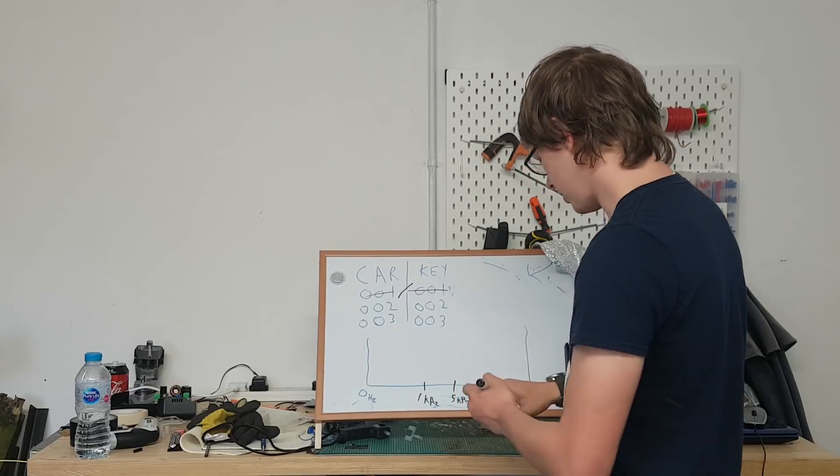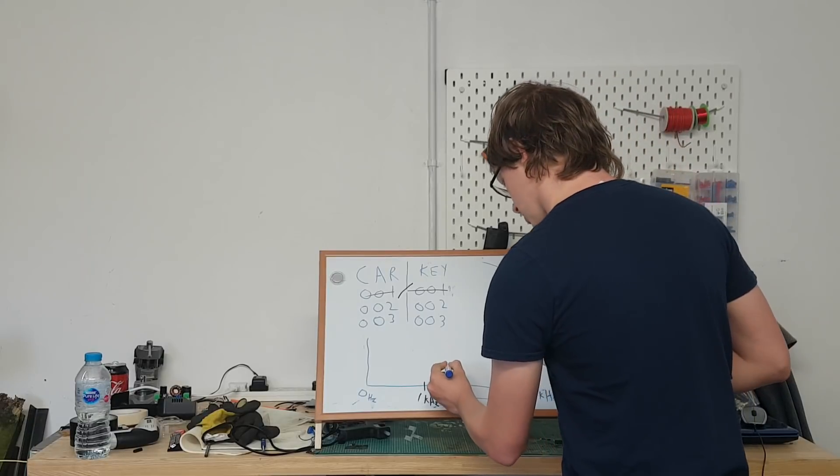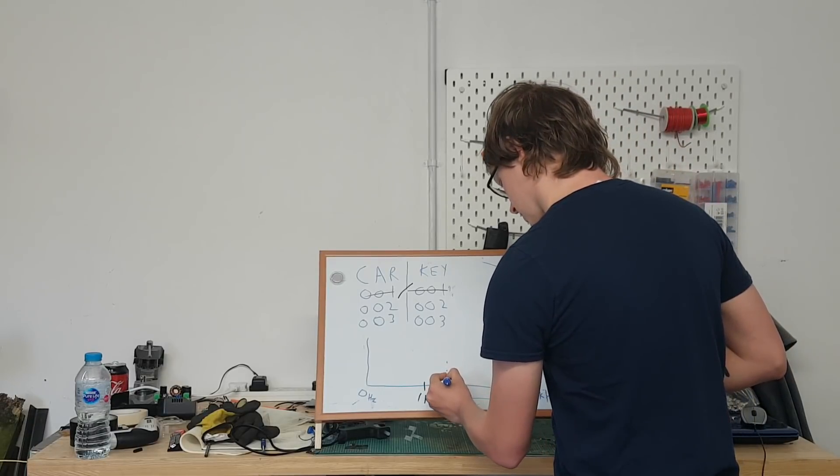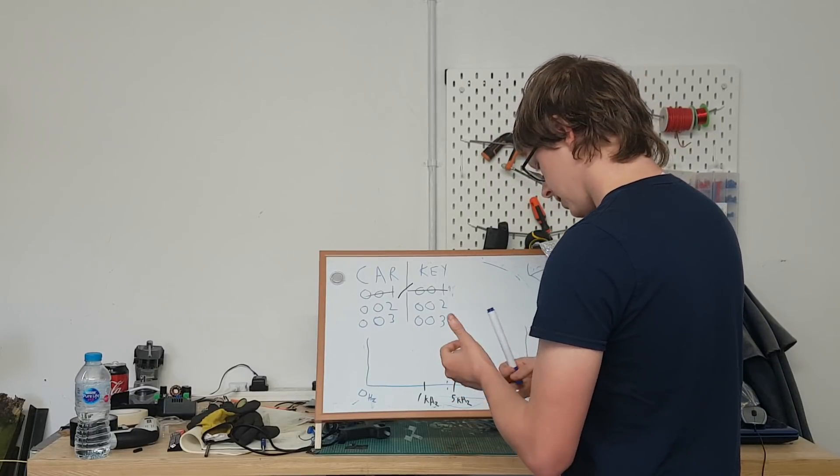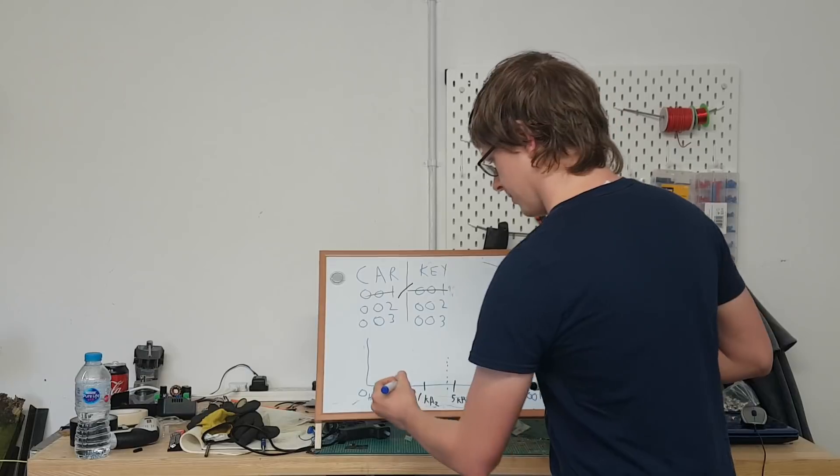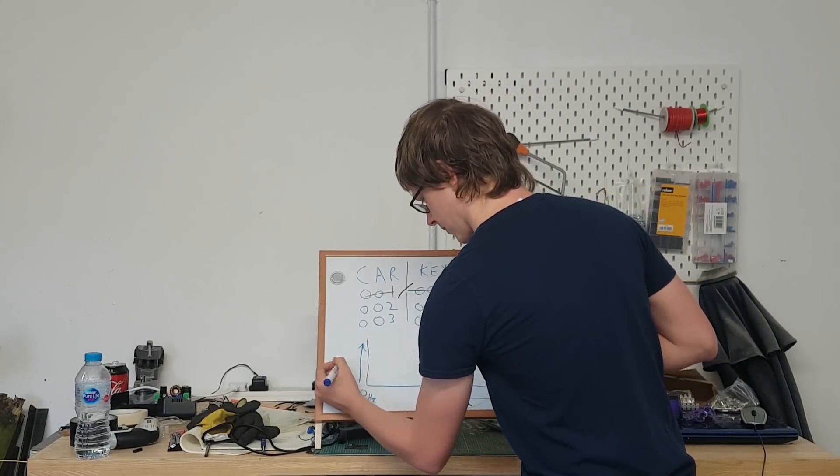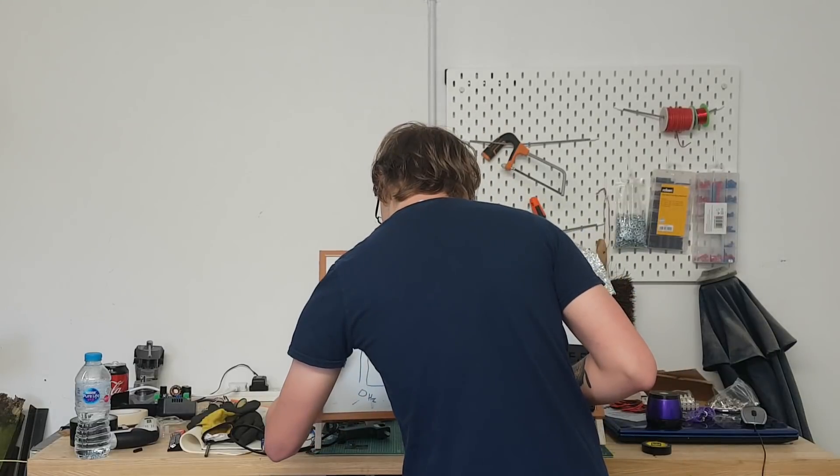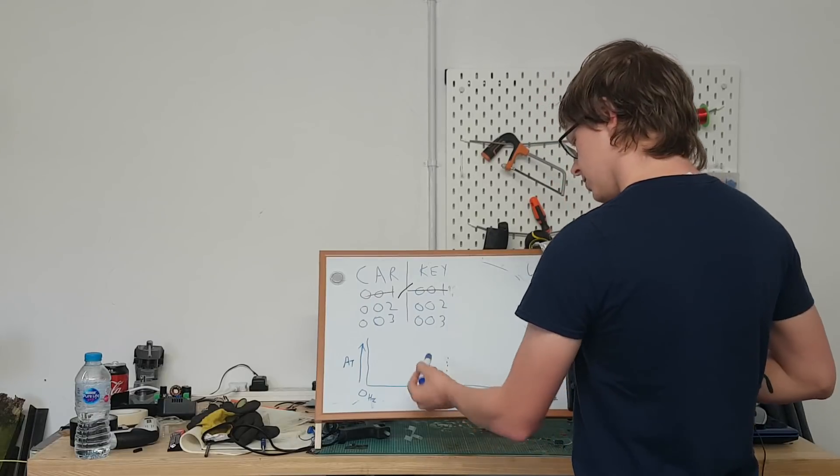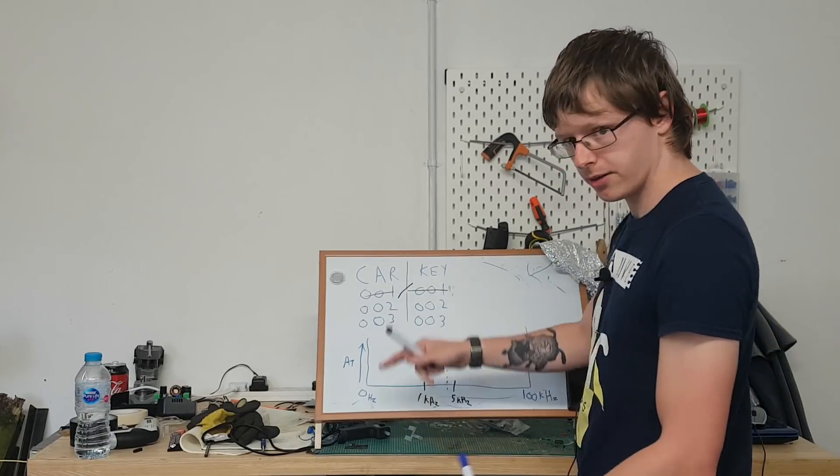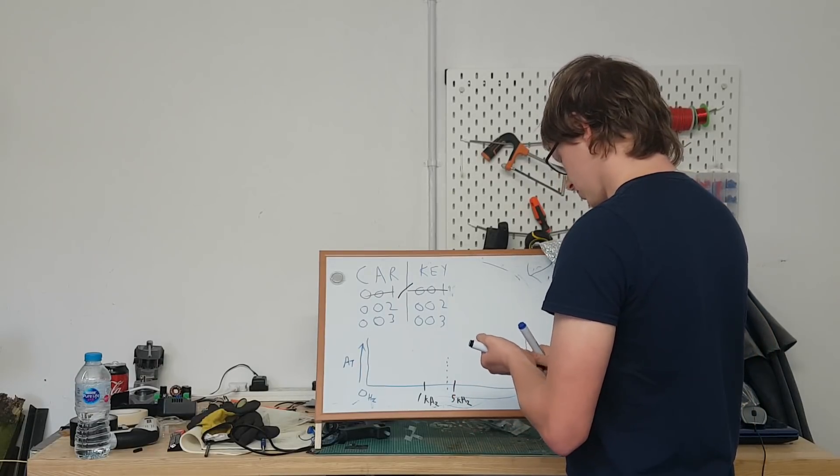So if you have your signal, we'll say that this is your car key signal here, hopefully you can see that okay. And also we'll say that this is amplitude, amplitude over time. That's the wrong unit of measurement but it'll be fine. So this is how strong the signal is. The higher it up it is, the stronger the signal.